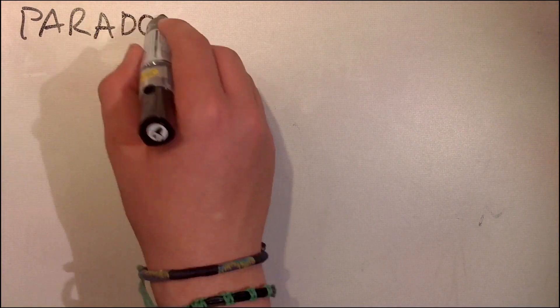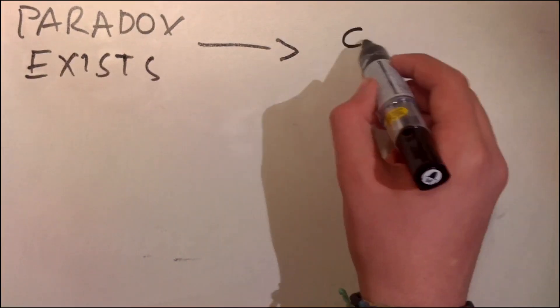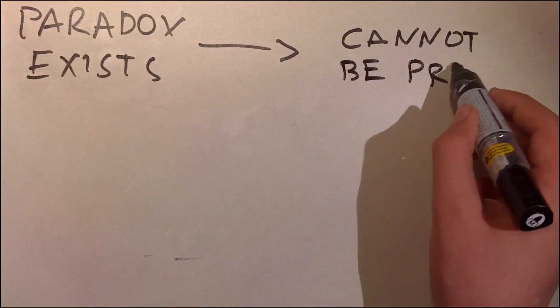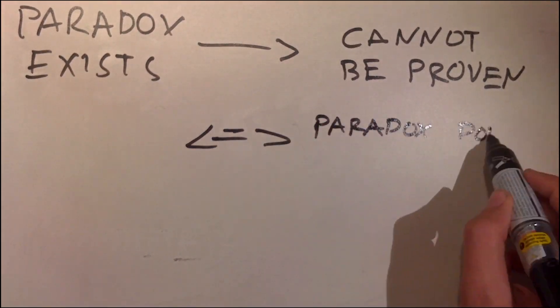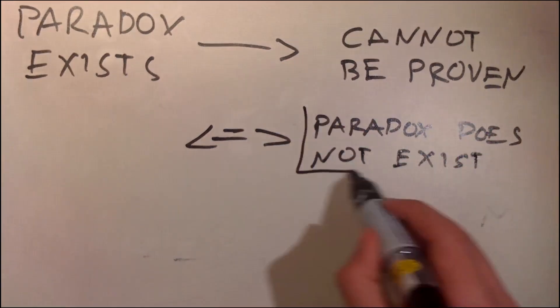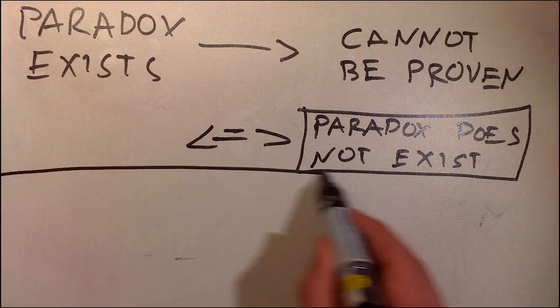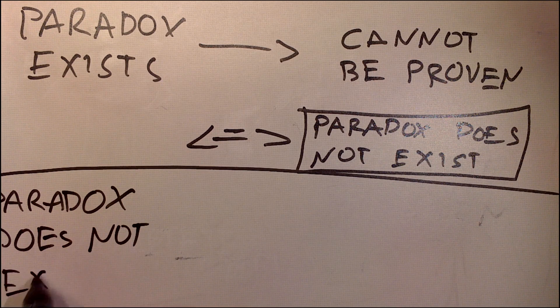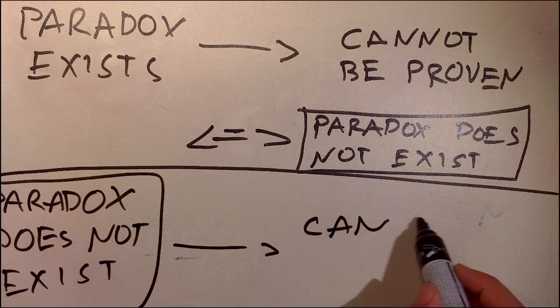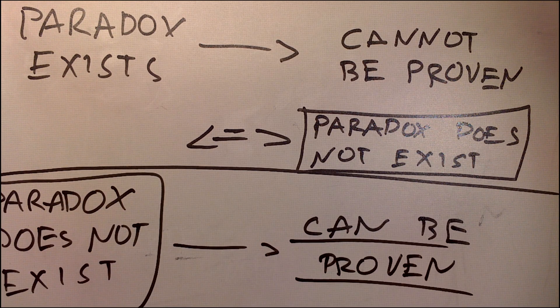Therefore, if the paradox exists, then our system cannot be proven and we can conclude that the paradox does not exist. The other way around, if the paradox does not exist, then our system can indeed be proven and we can conclude that the paradox truly does not exist. Either way, we can see that the paradox does not exist.